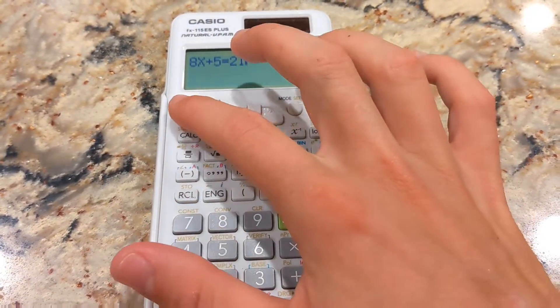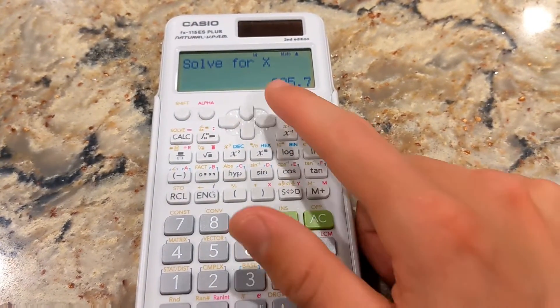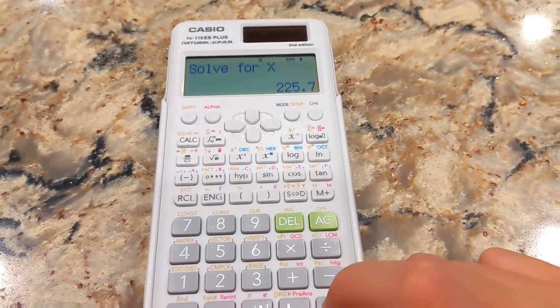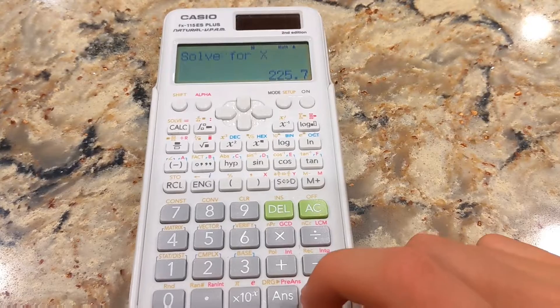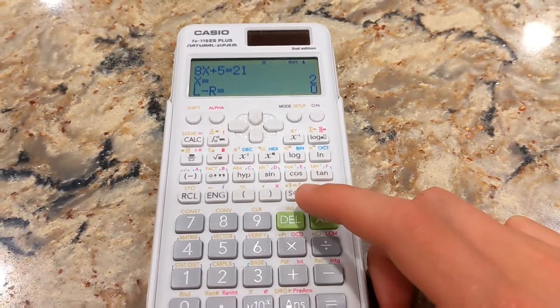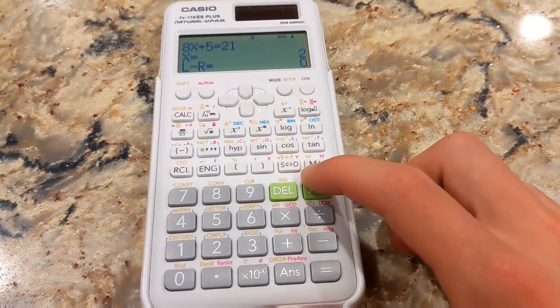Now, I hit Shift, Solve, Solve for X. Disregard that number that was the last variable answer that I got. So I'll hit Equal, and it gives me 2. And 8 times 2 is 16, plus 5 is 21. That's really cool.